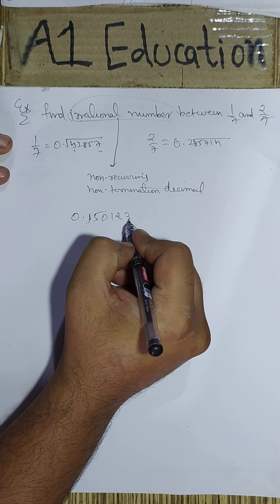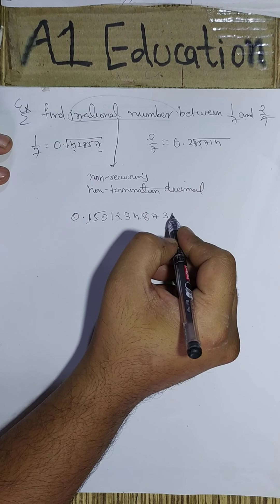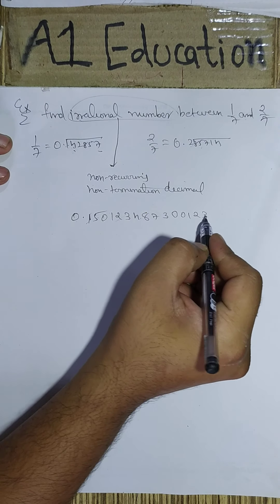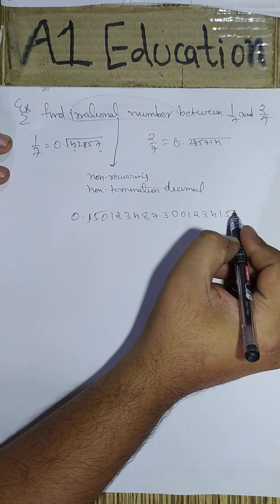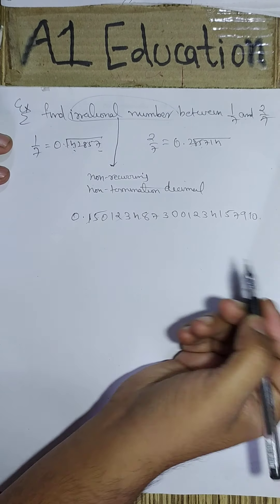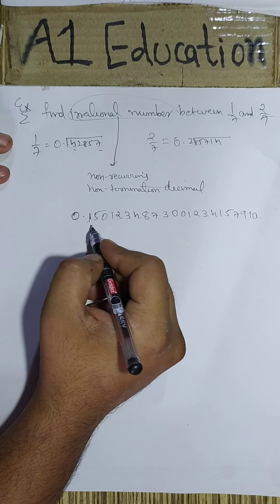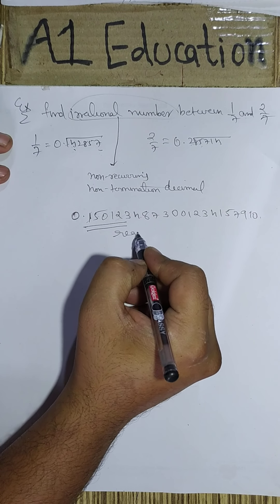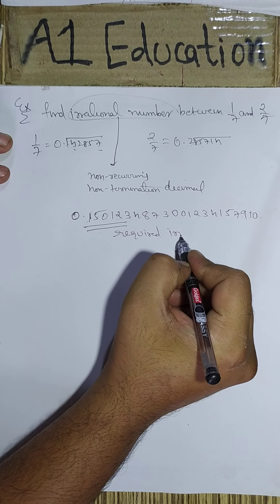Now I can add any digits, any number of digits which I want. And we can say that this is a required irrational number.